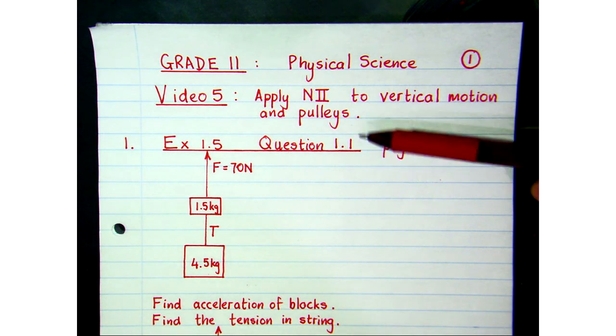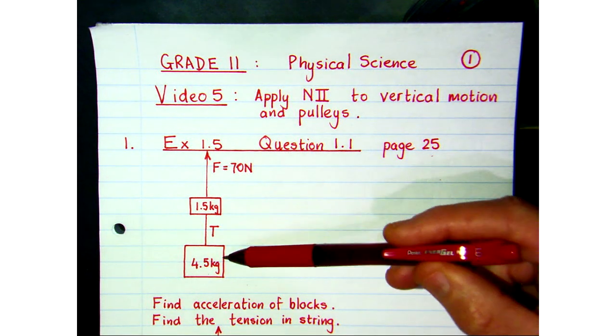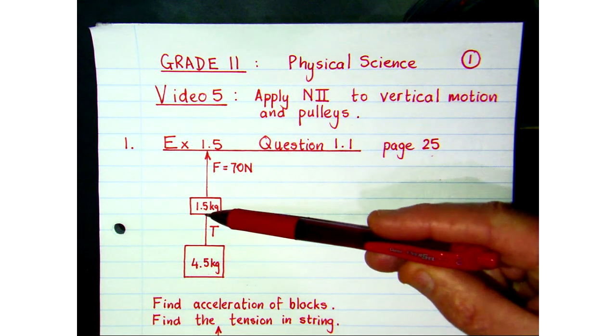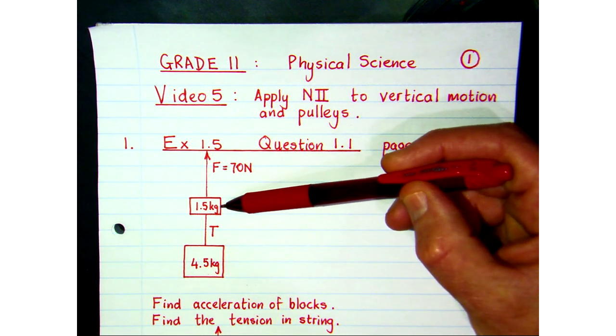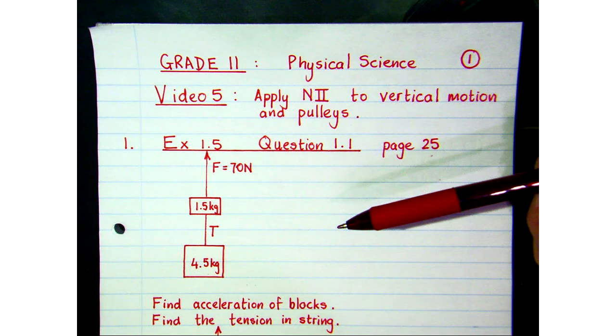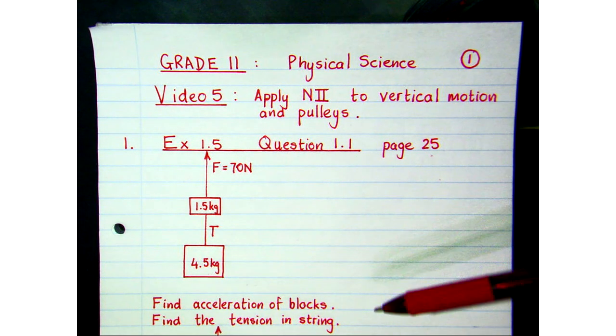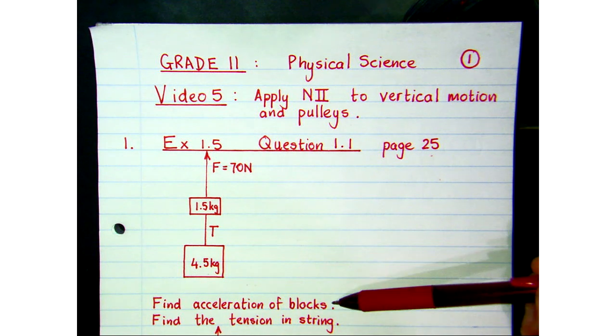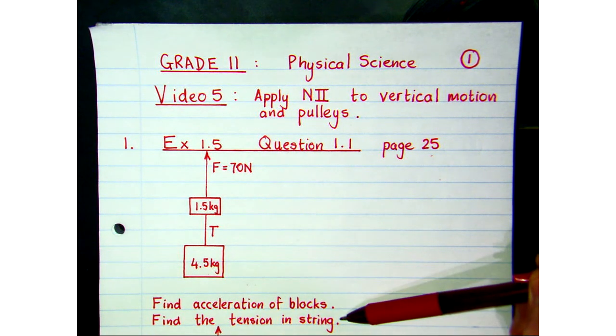So the first question we need to look at is on page 25 of your notes and it's really just two masses that are joined by a string and there's an upward force applied to the 1.5 kg block. The upward force is 70 Newtons. So in this problem we need to find what the acceleration on the system is and what the tension in that string is.